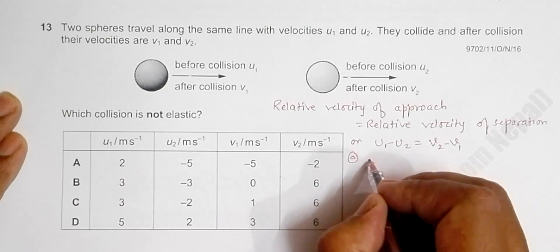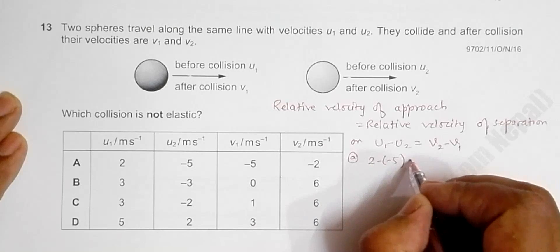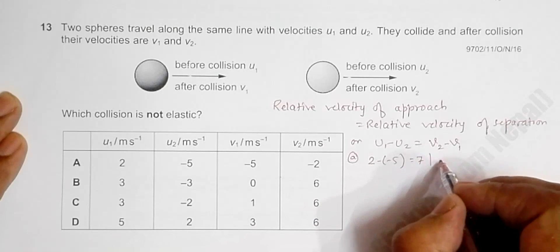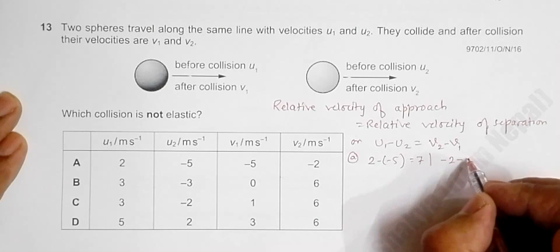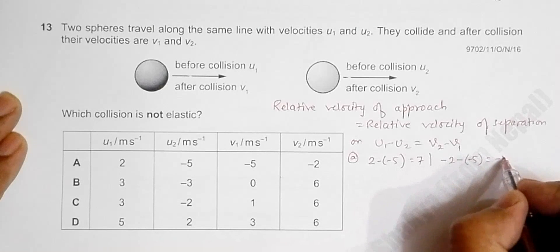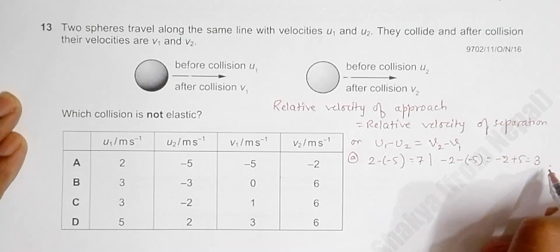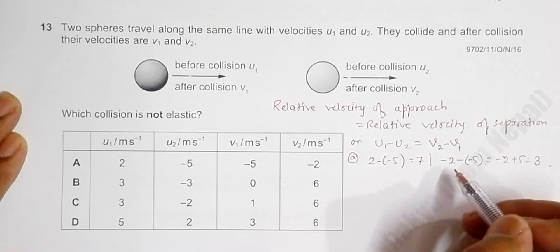For choice A, left side equals 7 (2 minus -5), and for the right side, -2 minus v₁, which is again minus, so -2 minus (-5), that's equal to -2 plus 5, equal to 3.